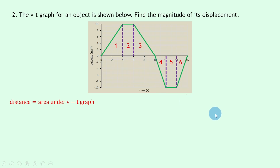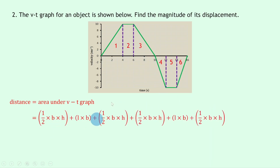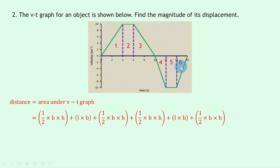Let's write down how to find the areas. For shapes one, two, and three we have: half times base times height, plus length times breadth, plus half times base times height. Then for shapes four, five, and six we add: half times base times height, plus length times breadth, plus half times base times height. Now we can look at the graph and pick out the numbers.